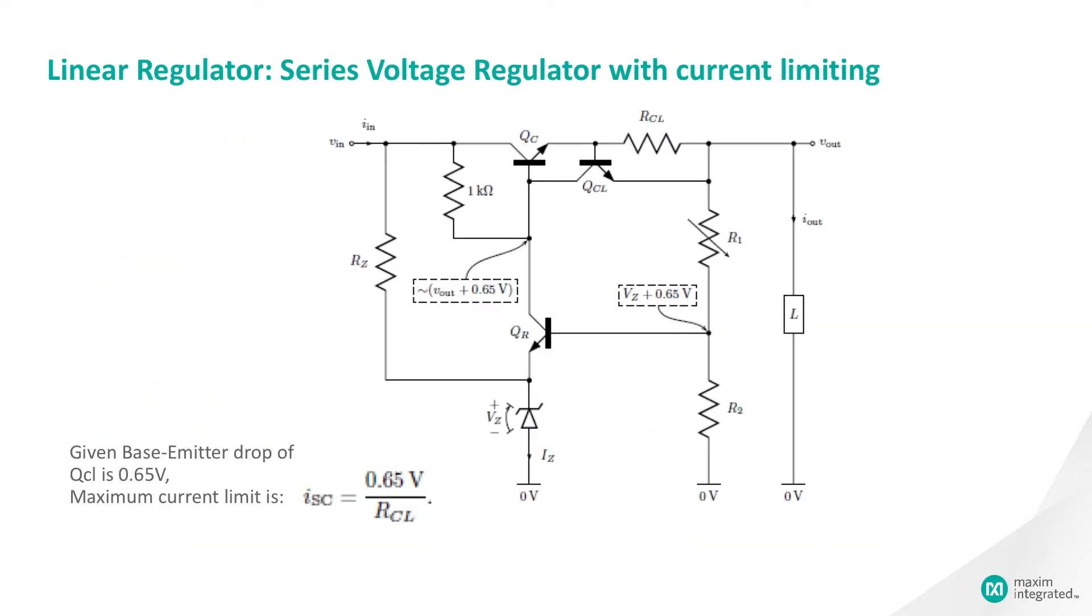To limit the current output, transistor QCL is added. QCL is normally cut off. When the current I-out is great enough to put a 0.5-volt drop across the RCL resistor, QCL starts to move out of cutoff and pull more current through the 1k-ohm resistor. This QCL current lowers the QC base, which causes QC to reduce its collector-to-emitter current. As Vout falls, QR goes into cutoff and QCL gains complete control over QC.